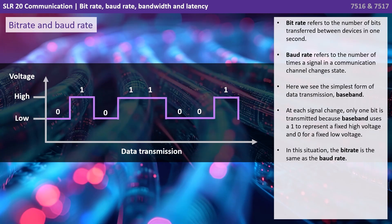Bit rate refers to the number of bits transferred between devices in one second, whereas baud rate refers to the number of times a signal in a communication channel changes states. Here we see the simplest form of data transmission known as baseband. At each signal change, only one bit is transmitted because baseband uses a one to represent a fixed high voltage and zero for a fixed low voltage. In this situation, the bit rate is the same as the baud rate.